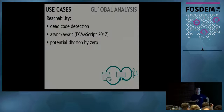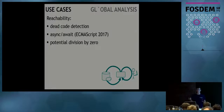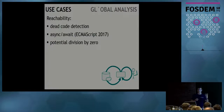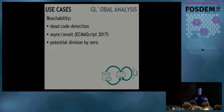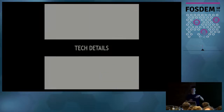Another use case is global analytics. Because we have this graph, we can do reachability-style queries: dead code detection, detection of async/awaits where you run an async call that's never awaited, and potential division-by-zero detection by propagating issues through the code — checking whether a value can be zero at the point it's evaluated.